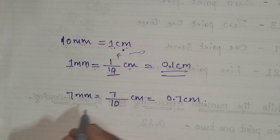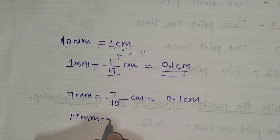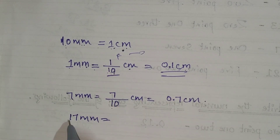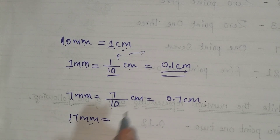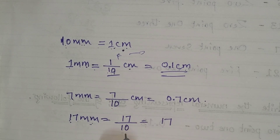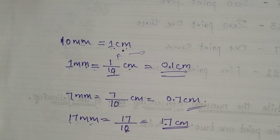One more example: 17 millimeters. We write 17 divided by 10. Converting to decimal form, we keep 17 as-is and place the decimal point after 1 digit, giving us 1.7 centimeters. That's how you convert from millimeters to centimeters.